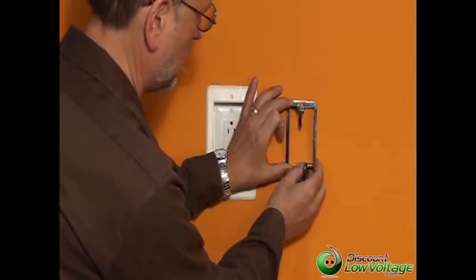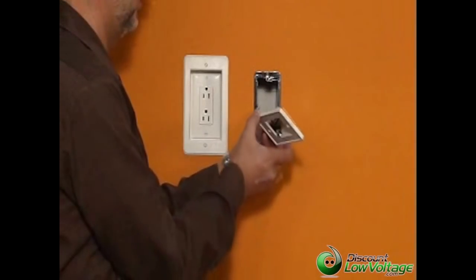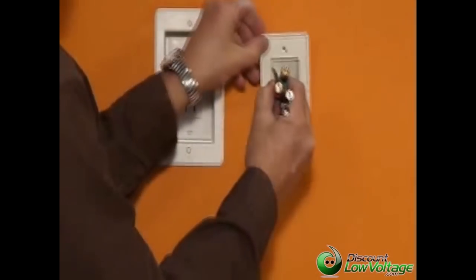Use the bracket as a template for cutting the hole, then install the bracket. Fish the wires from behind the wall surface through the mounting bracket and the entrance plate.